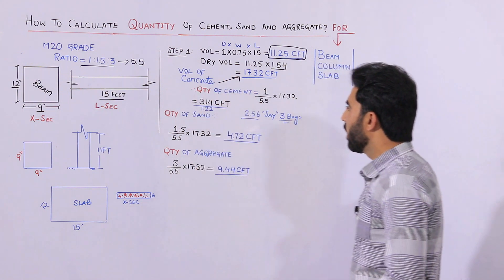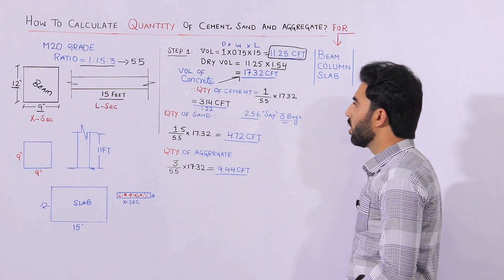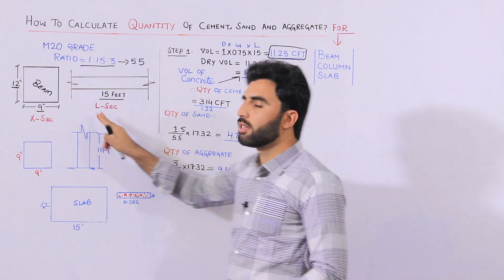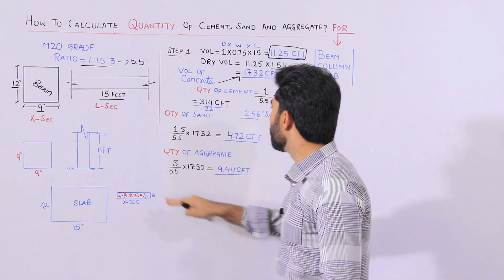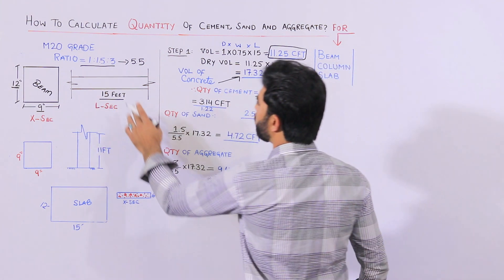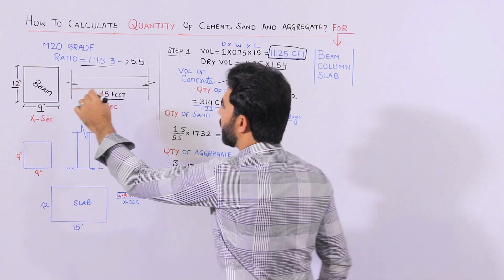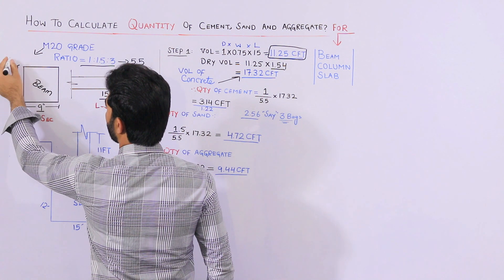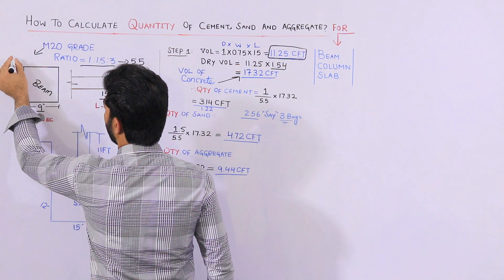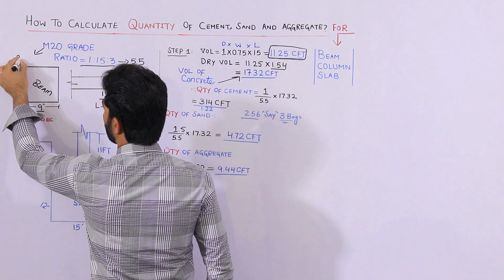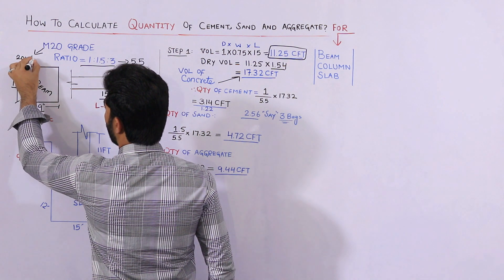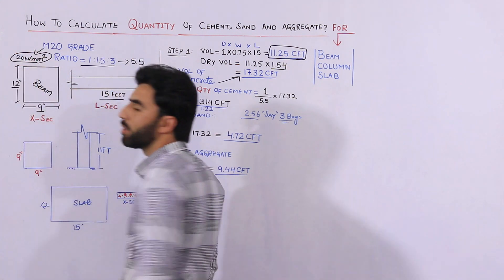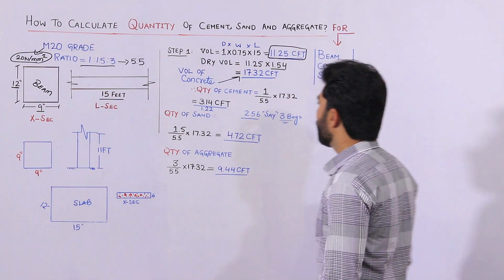Now let me guide you for quantity of cement — how much cement is required to construct this beam. We have a sum of ratio 5.5 for M20 grade concrete. M20 means the characteristic strength of concrete after 28 days is 20 newton per mm². Remember this point.